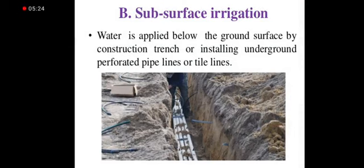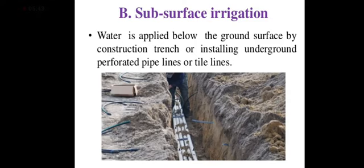Next is subsurface irrigation. The previous methods — flood, border, furrow, and basin — were all surface irrigation methods, meaning we irrigate on the top of the surface. Subsurface irrigation means we are not irrigating on the top of the surface; we are irrigating the crop from below the surface. Water is applied below the ground surface by constructing trenches and installing underground perforated pipelines or tile lines.